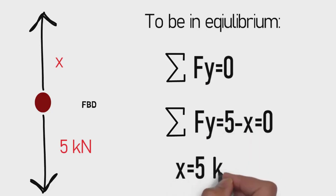We have forces only in y direction and sum of forces in y direction must be equal to zero. From this equation, we find that truss carries 5kN.